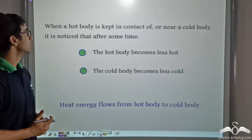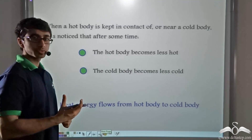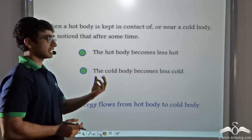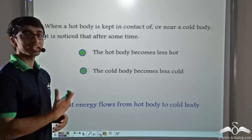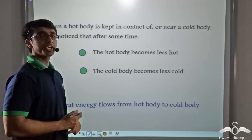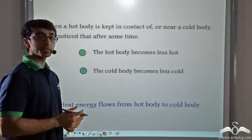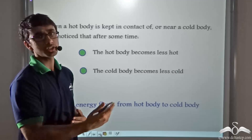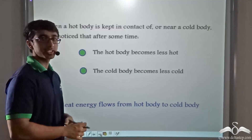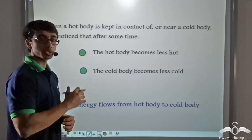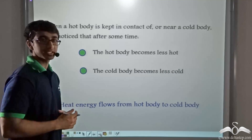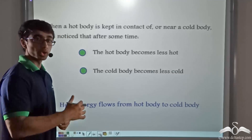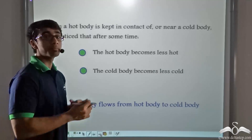When a hot body is kept in contact with or near a cold body, it will be noticed after some time that the hot body becomes less hot and the cold body becomes less cold. We can illustrate this with a practical example. During winter time when you take a bath, you open the hot water tap and the cold water tap together. The water you get is neither very hot nor very cold. But if you were to switch on each tap individually, you will notice that the hot water tap gives hotter water and the cold water tap gives colder water than when both taps are opened together.